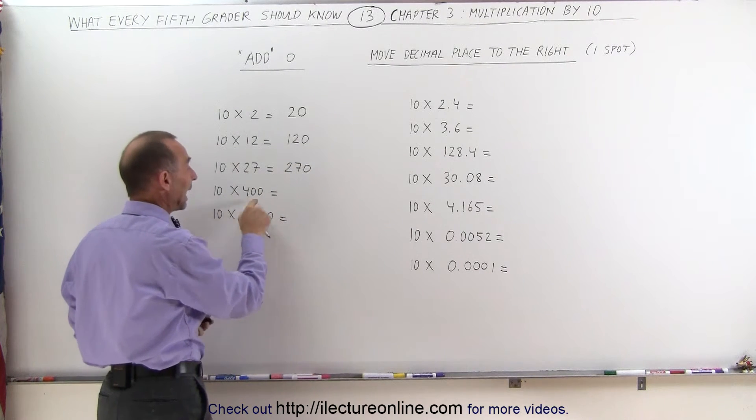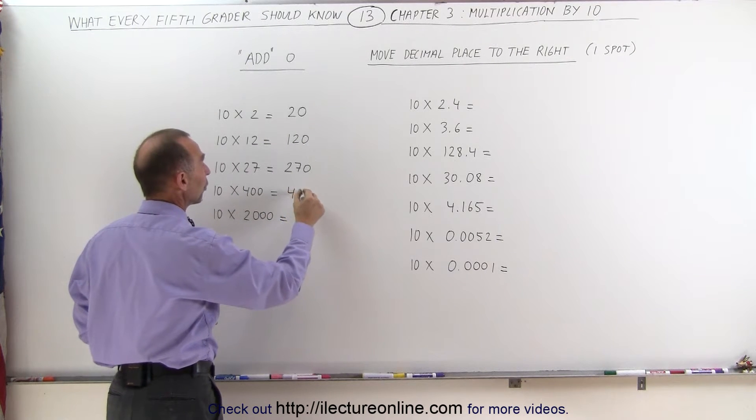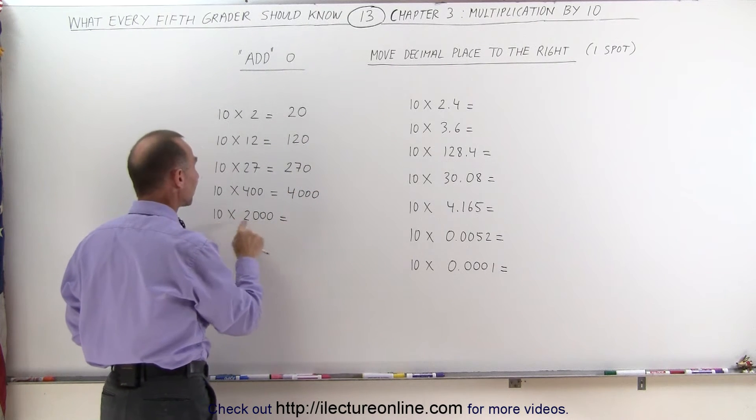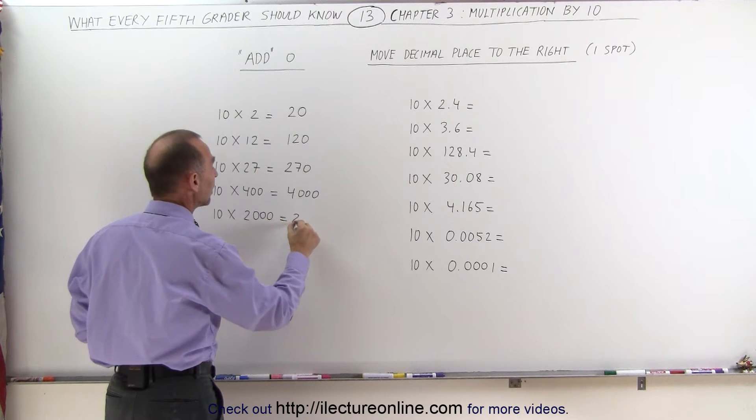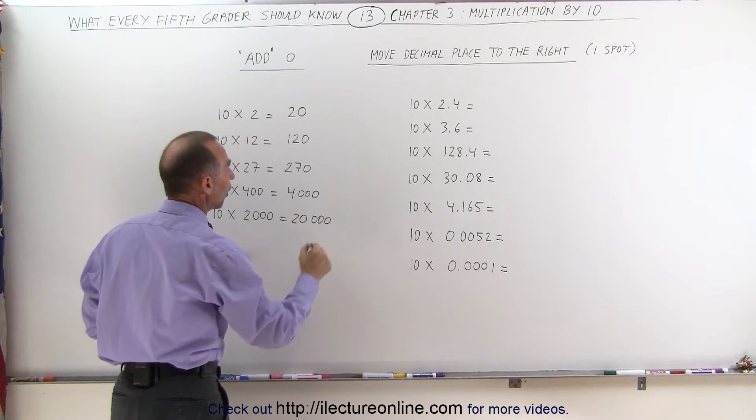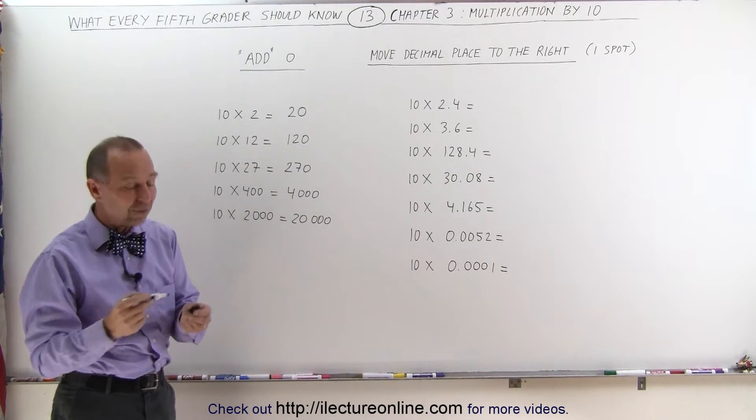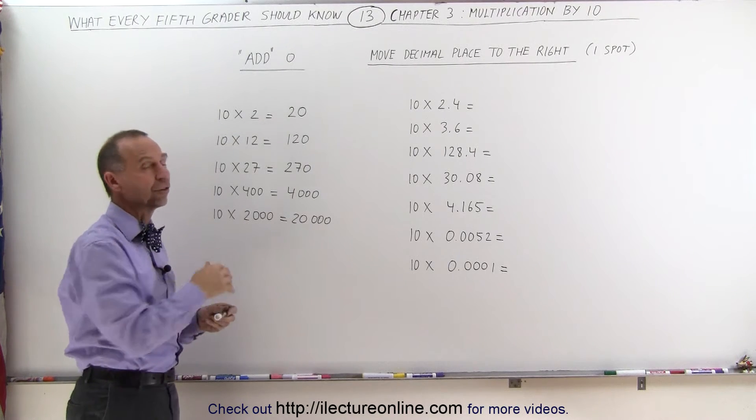10 times 400, add a 0, you get 4,000. And 10 times 2,000, add a 0, you get 20,000. So all you have to do when you multiply times 10, you simply add a 0 to the number.